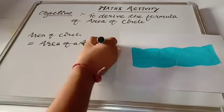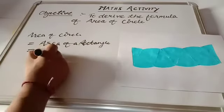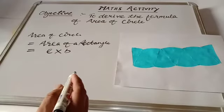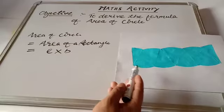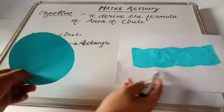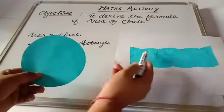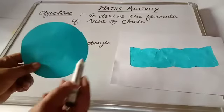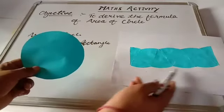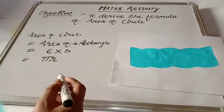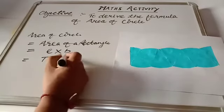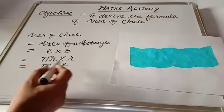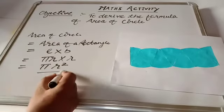The area of a rectangle is length × breadth. Now, the length of this rectangle is made up of half the circumference of the circle. You know that the circumference of a circle is 2πr, so half of it is πr. The breadth is the radius of the circle, that is r. So multiplying them gives πr × r = πr². From this activity, we have derived that the area of the circle is πr².